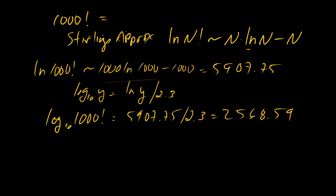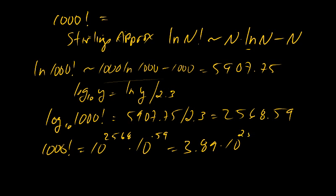Now I can raise this to the power of 10 to get my final answer of a thousand factorial is 10 to the 2568 times 10 to the 0.59, which then becomes 3.89 times 10 to the 2568.